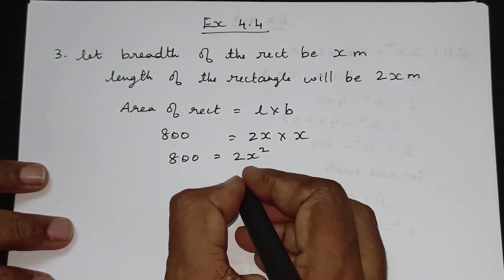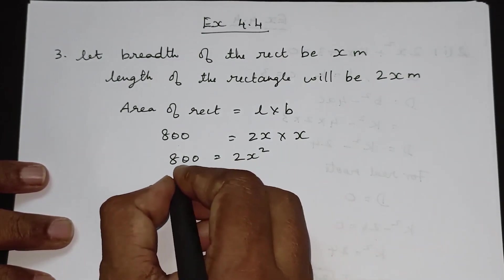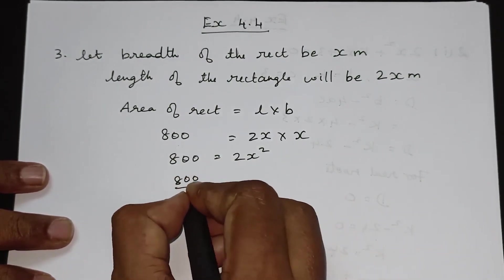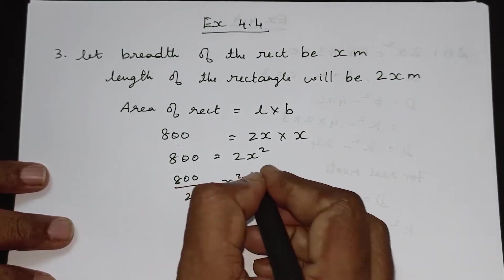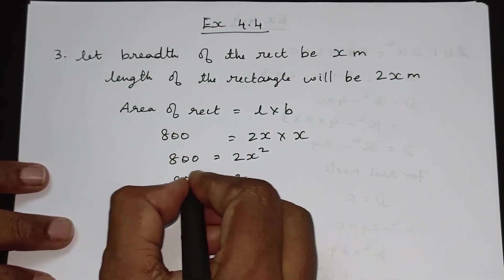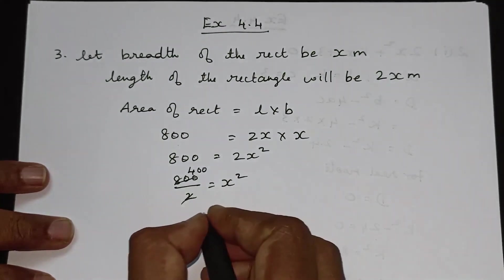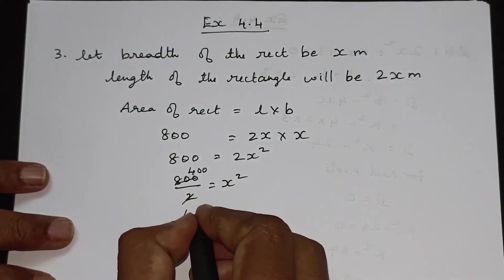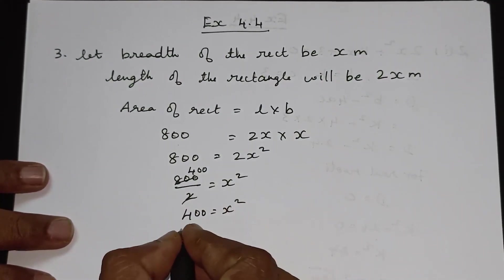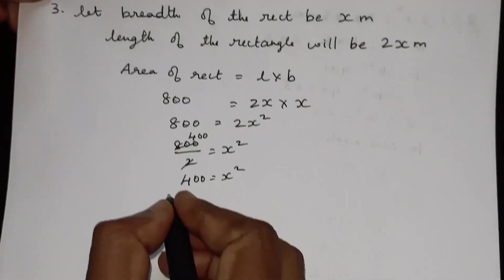Dividing both sides by 2, 800 by 2 is equal to x². One side is 400. Then x² is equal to 400.